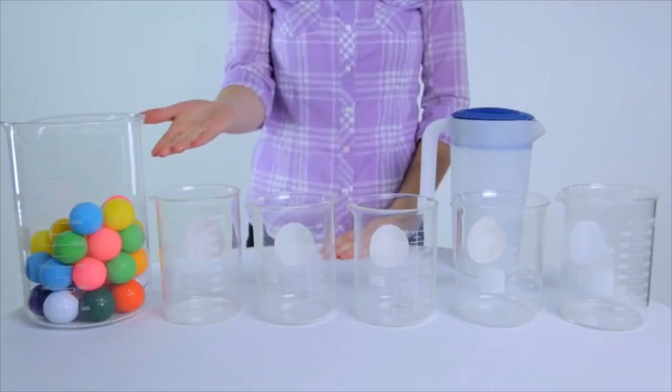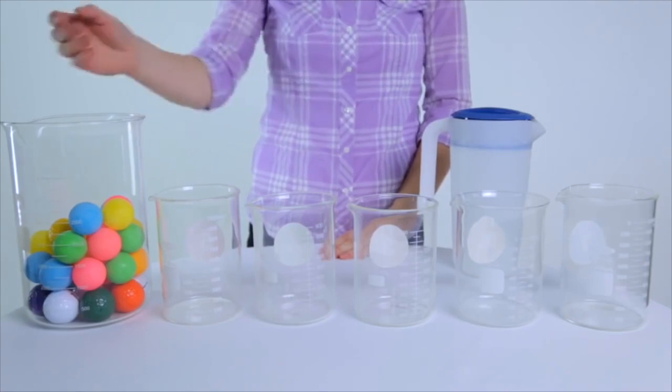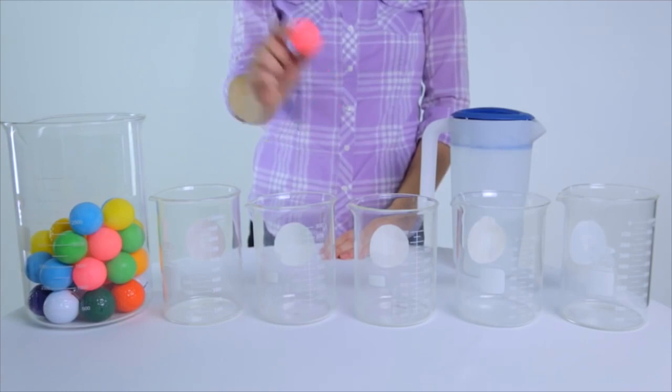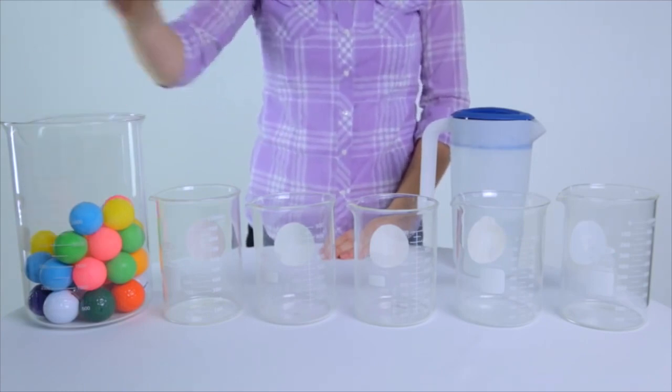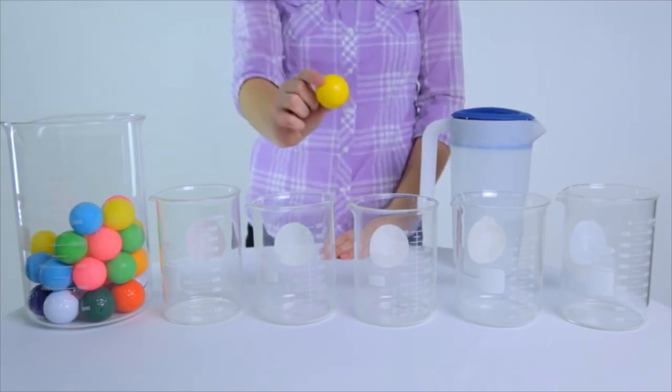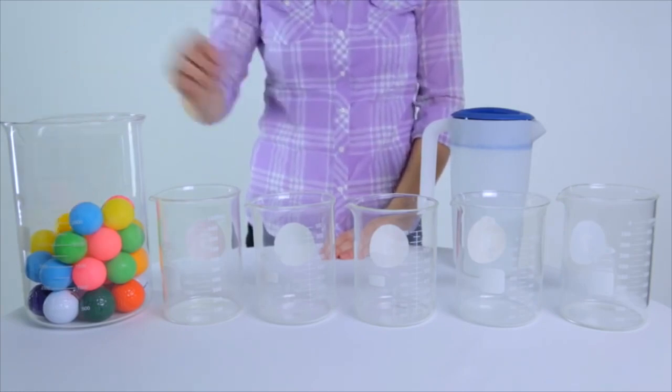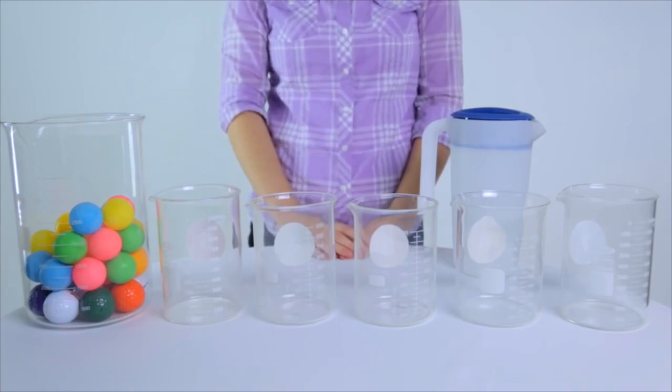Here is a beaker full of golf and ping pong balls that together represent the raw plant material. Each colored ping pong ball represents a different volatile aromatic compound. The golf balls represent other compounds found in the plant material that are structurally too large or heavy to be collected by steam distillation and will not be found in the essential oil.